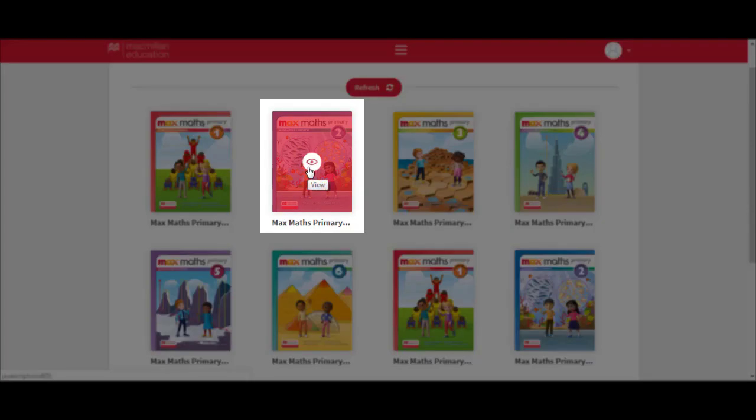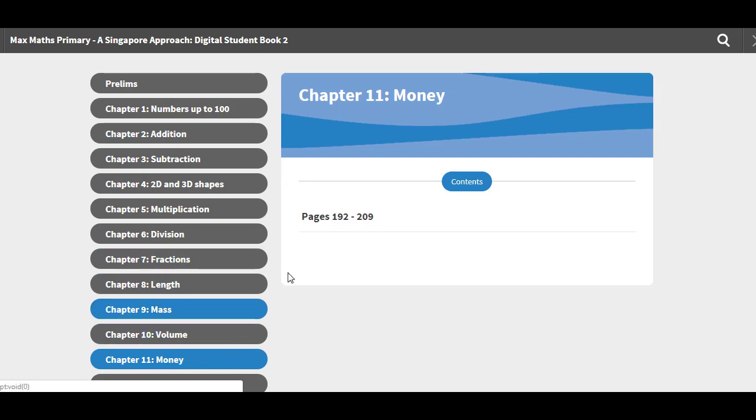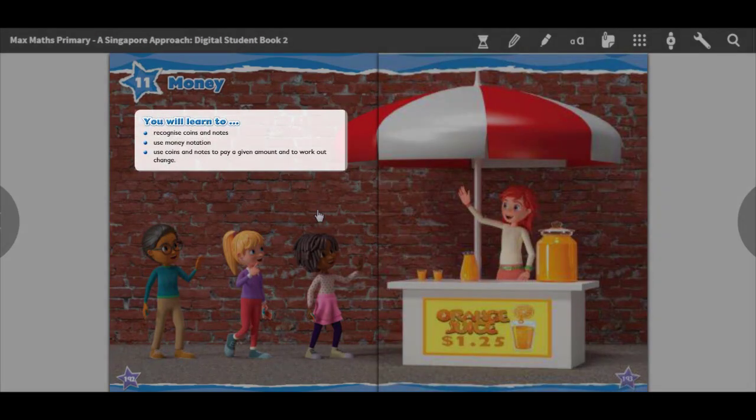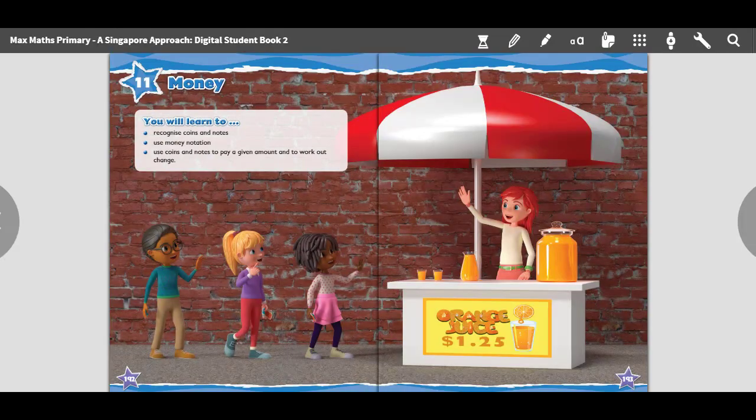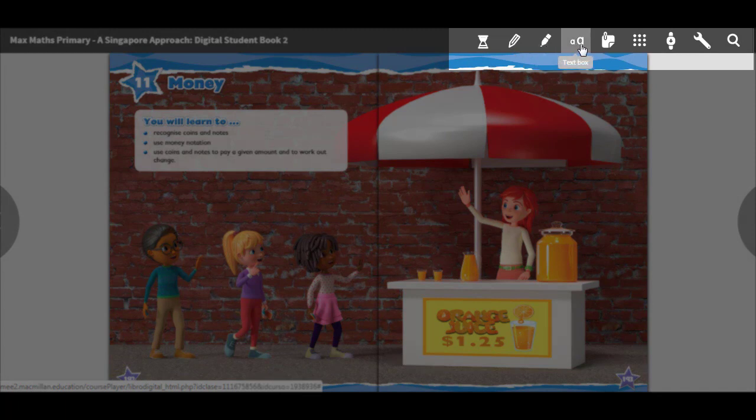Each digital student book offers an easy-to-use navigation system. Simply click on the student book and select the chapter. Each chapter opens with a key objective of the unit. At the top of each page there are key digital features to support and enrich learning.